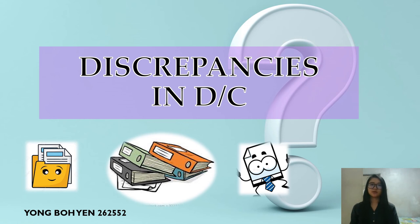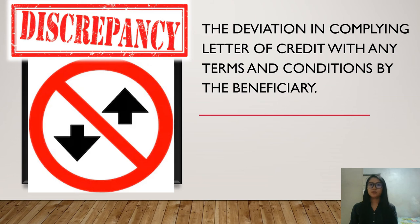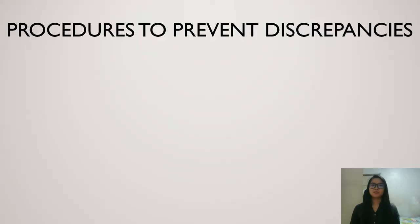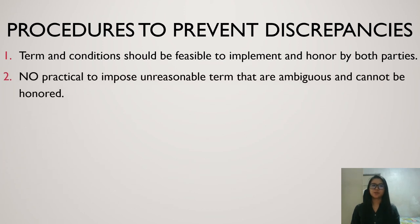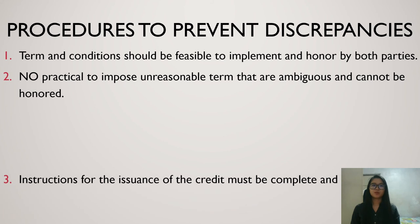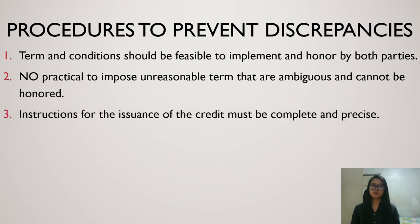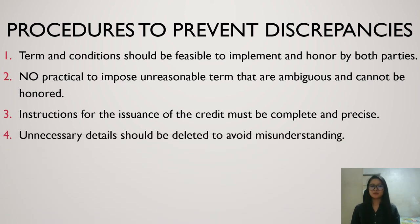Discrepancy is the deviation in complying with the letter of credit's terms and conditions by the beneficiary, and this deviation will cause many unnecessary problems. To prevent discrepancy: the terms and conditions negotiated should be feasible to implement and honor by both parties when finalizing the contract. There should be no imposition of unreasonable terms that are ambiguous and cannot be honored. The instructions for the issuance of the credit must be complete and clear, and excessive and unnecessary details should be avoided to prevent confusion or misunderstanding.